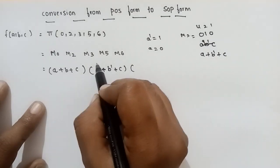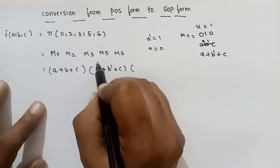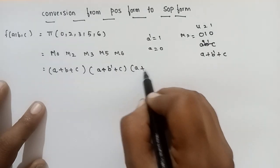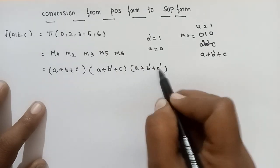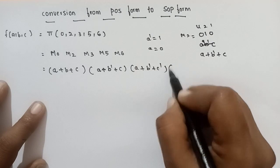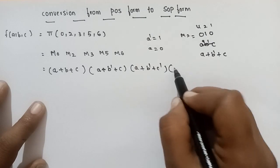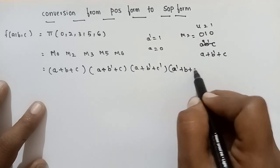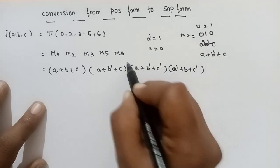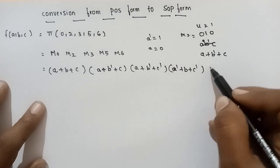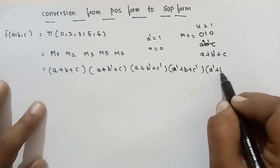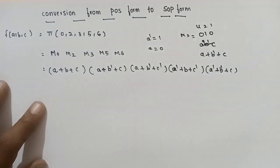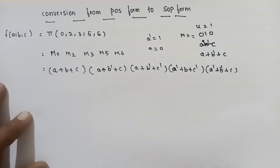Here is M3. M3 is equal to 0,1,1 — that is A plus B-dash plus C-dash. Next, M5 is equal to 1,0,1 — that is A-dash plus B plus C-dash. M0 is equal to A-dash plus B plus C-dash.